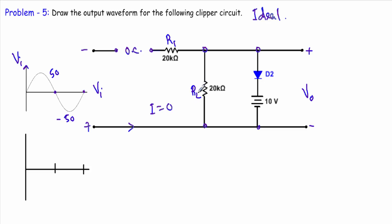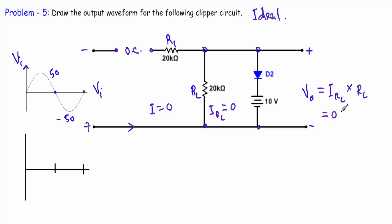Therefore, the current through load resistor RL will be exactly equal to zero. Since the current is zero, the output voltage equals I times RL, which is also zero. That means during the negative half cycle, our output voltage will be zero volts.